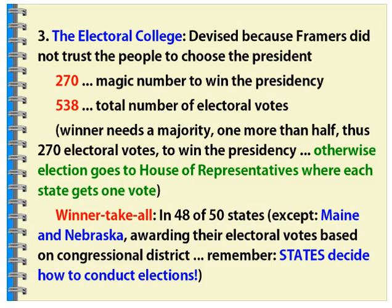Anyone going to win the presidency would need to win one more than half — 270 electoral votes. What happens if nobody gets a majority, or it's a tie at 269-269? In that case, the election for president goes to the House of Representatives, and the election for vice president goes to the Senate. Each state in the House would have one vote, with the delegation voting as one per state, and the majority would rule.